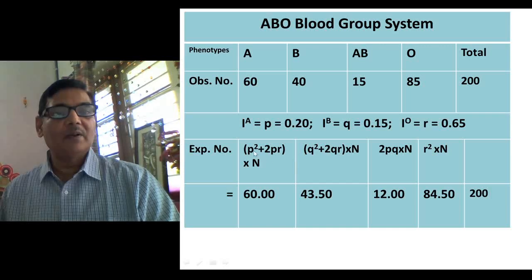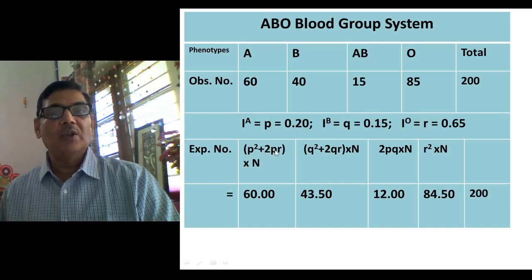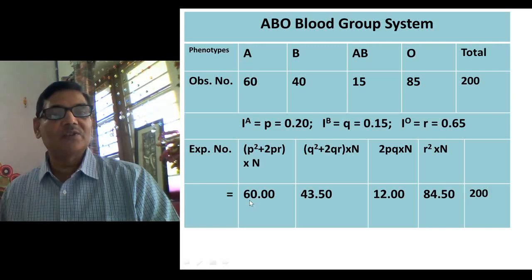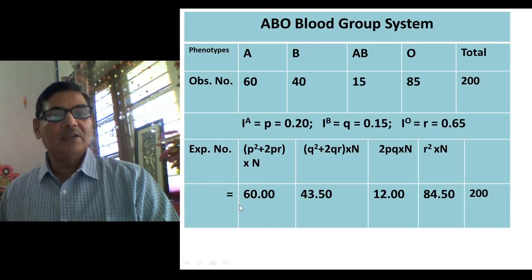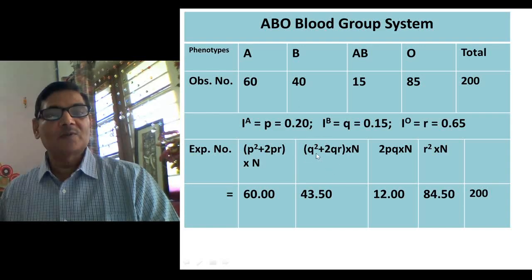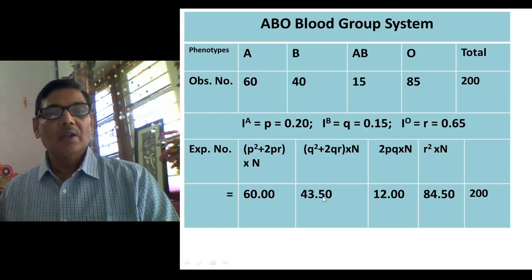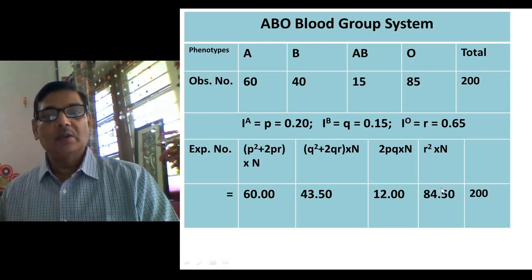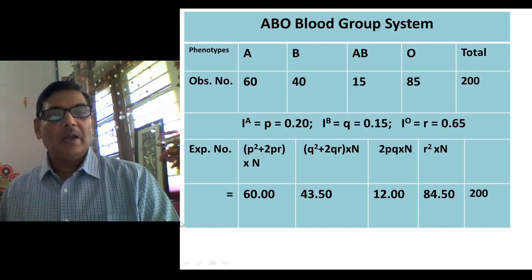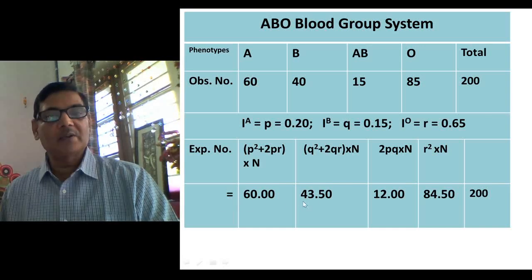Putting in the values: (0.20² + 2 × 0.20 × 0.65) × 200 = 60. So the observed number of 60 for blood group A matches the expected value exactly. The observed and expected values are compared to assess whether the population is in Hardy-Weinberg equilibrium.